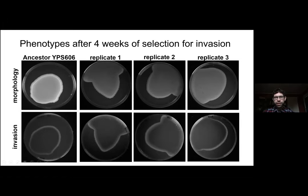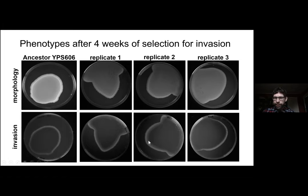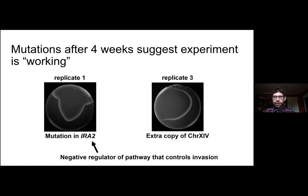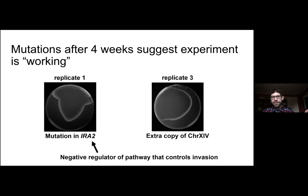On the left is the ancestor; the right three columns are different replicates. Already at four weeks you're getting a bit of a biofilmy appearance at the top and some structure to the edges of the colonies. Some invasion patterns show more digging in the middle of the plate, thicker rings, and different patterning to the outside. To make sure this wasn't just protocol variability, we did some sequencing and found that one replicate had a mutation in IRA2, one of the most well-characterized negative regulators of these invasion phenotypes — a good sanity check to keep going.